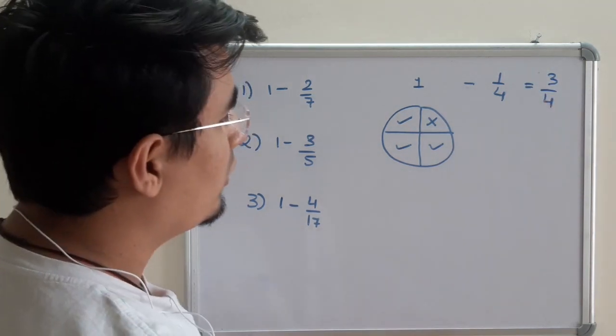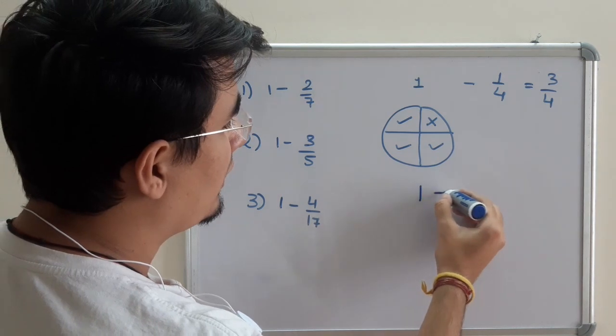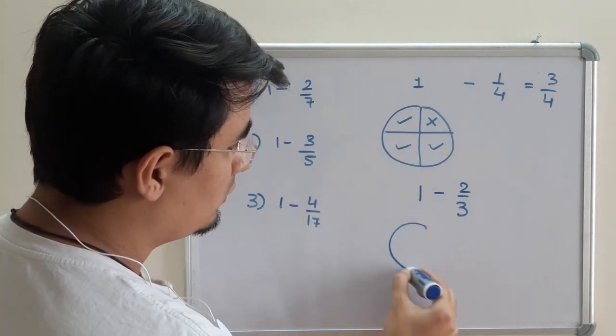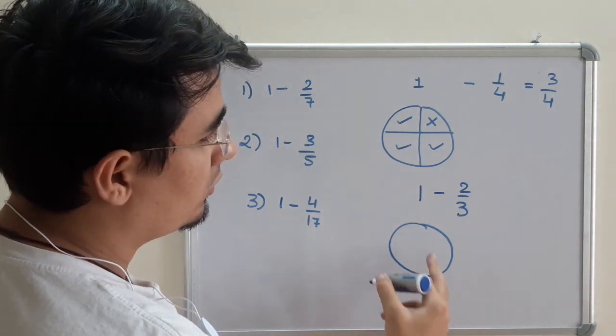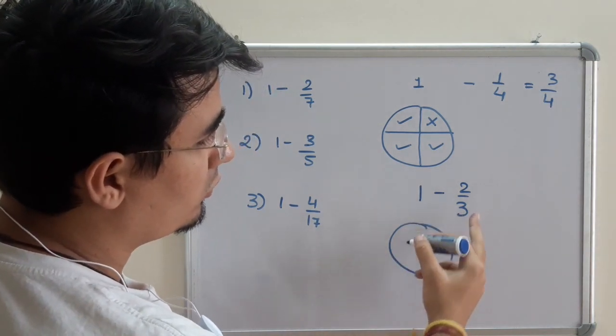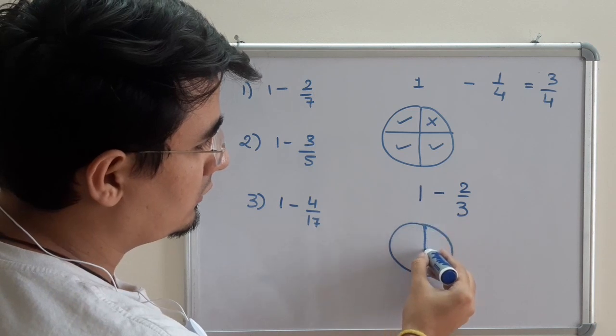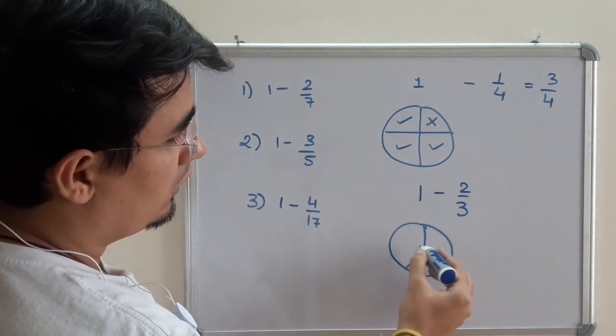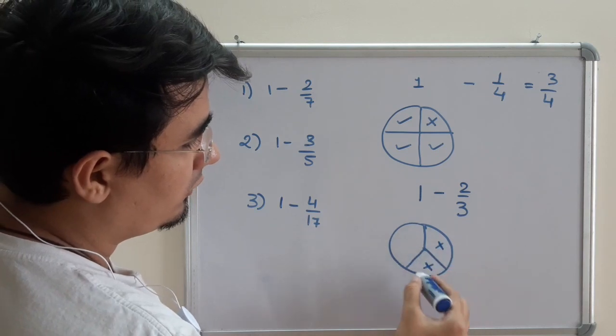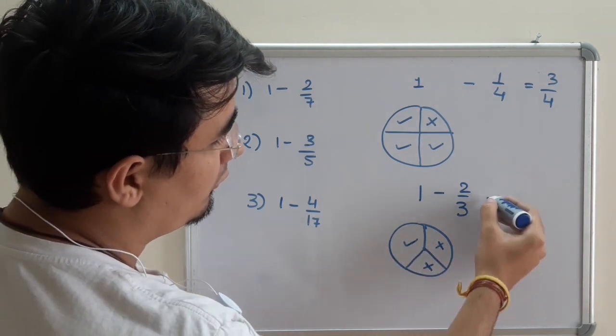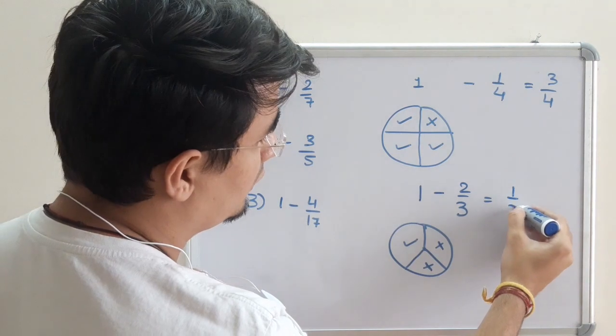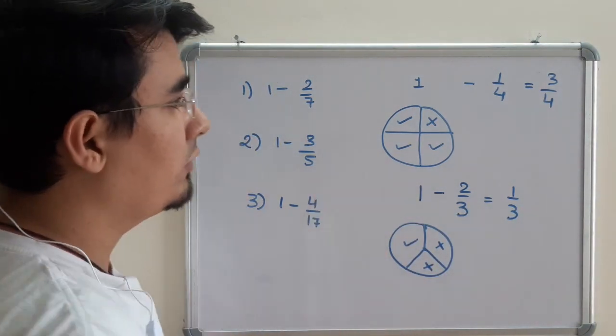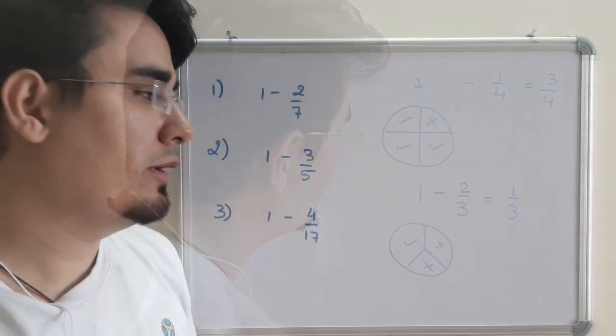Let us take one more example. Suppose 1 minus 2 by 3. So I have 1 whole thing and I need to give away 2 out of 3. So I will be dividing the circle into 3 equal parts. I will be giving away 2 parts of it. It will be remaining 1 part. So 1 upon 3 is the answer. So we will be using this understanding while solving these questions. Let us start with the topic.